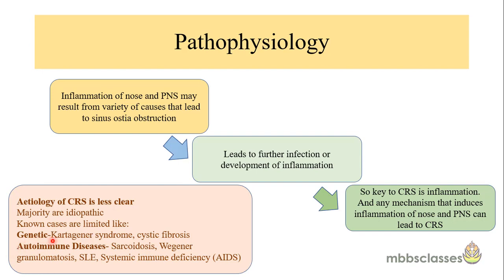In a limited number of cases the actual cause has been identified. These include genetic causes like Kartagener syndrome and cystic fibrosis, and some autoimmune diseases are associated with chronic rhinosinusitis — these are nasal manifestations of systemic autoimmune diseases like sarcoidosis, Wegener's granulomatosis, systemic lupus erythematosus, and some cases of systemic immune deficiency like HIV infection.